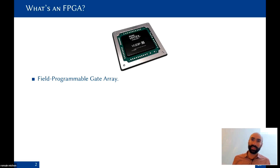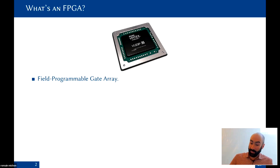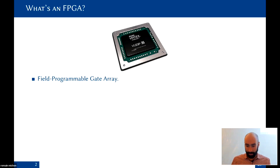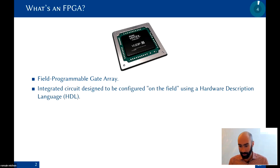CPUs, GPUs, and microcontrollers all have a fixed architecture. FPGAs, on the other hand, have a reconfigurable architecture. The way you program an FPGA is by describing an electronic circuit that implements a processor — it's very, very low level.